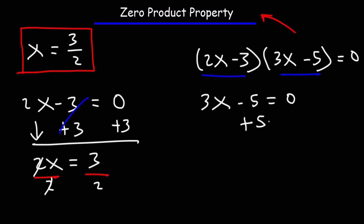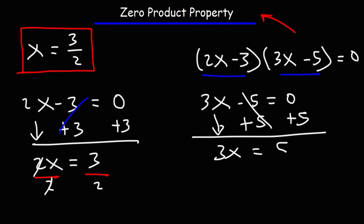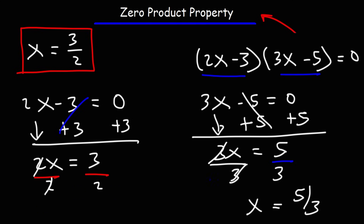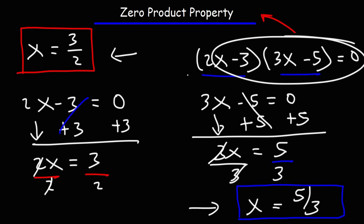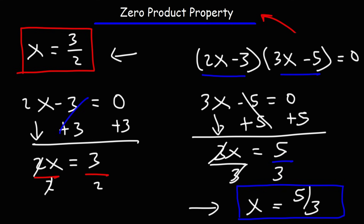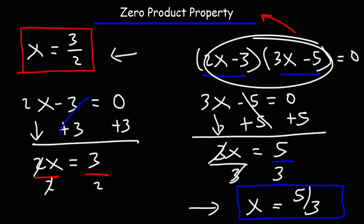For the second equation, 3x minus 5 equals zero, we add 5 to both sides to get 3x equals 5, then divide both sides by 3 to get X equals 5 over 3. So if you plug in either of these two X values into the original equation, the whole thing equals zero. That's how you solve equations using the zero product property: first the equation needs to be in factored form, then set each factor equal to zero and solve for X.